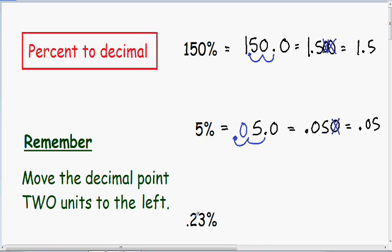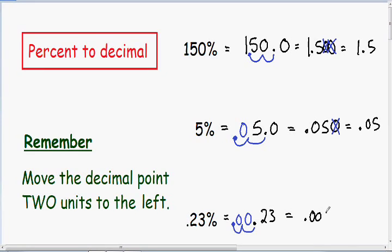So now let's move on to our last example. Here we have .23 percent. I'm going to rewrite this and give myself a little bit more space. Once again, we need to move the point two units to the left: one, two. Notice after we moved our decimal point two units to the left, we have two empty spaces. That's okay because the only thing we need to do is add two zeros. Now after we move our decimal point, we can get rid of our percent sign. The .23 turns into .0023.